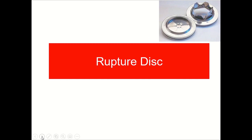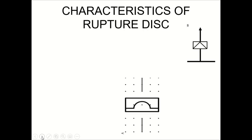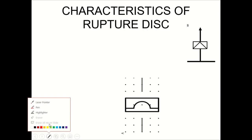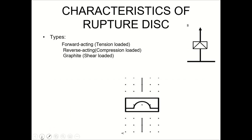First we will see the characteristics, and in the characteristics we will first see the flow sheet symbol. As you can see, the flow sheet symbol shows a concave shape of the rupture disk. This particular symbol is popularly used in a P&ID diagram. The two symbols are different because there are different types of rupture disk.